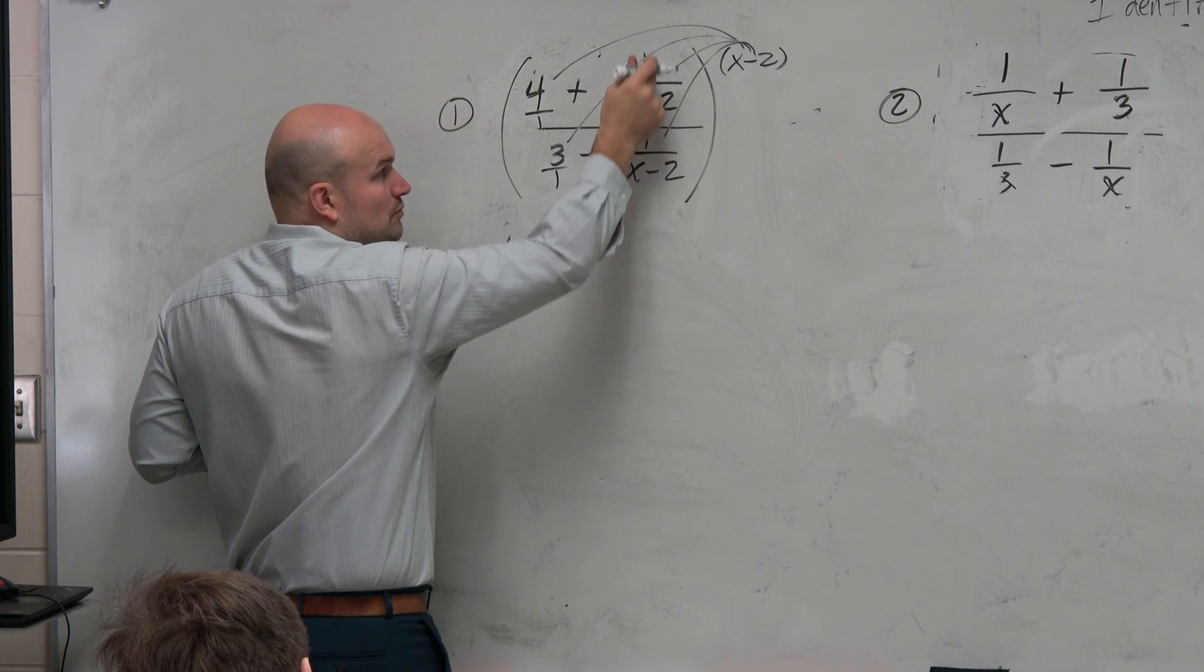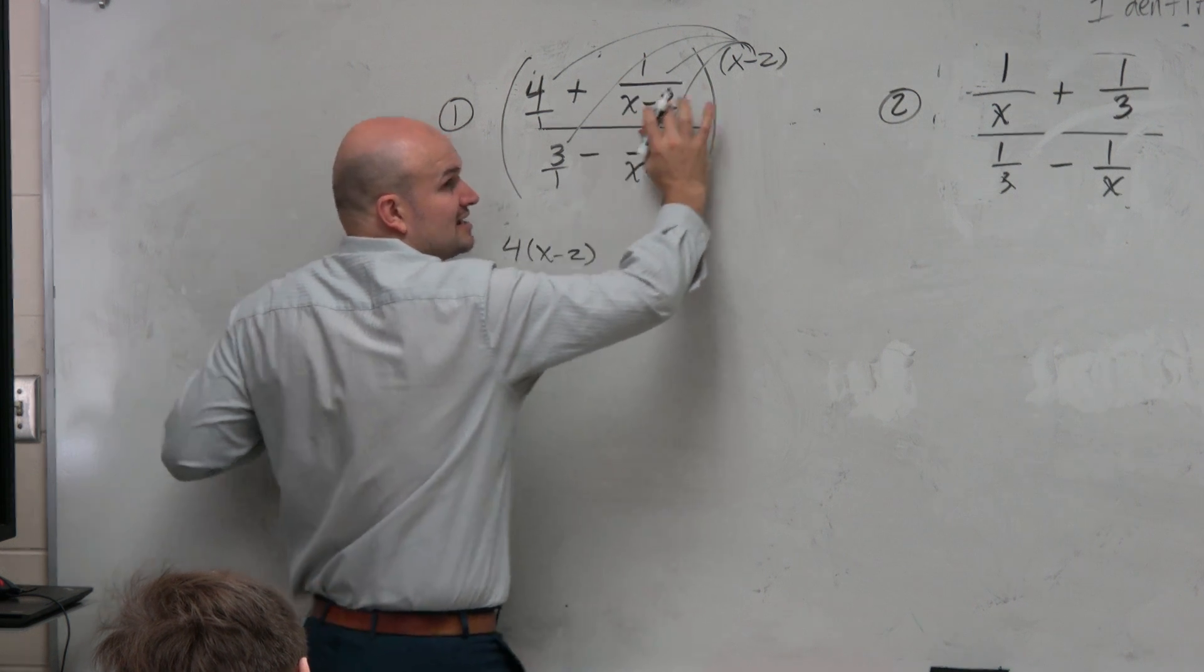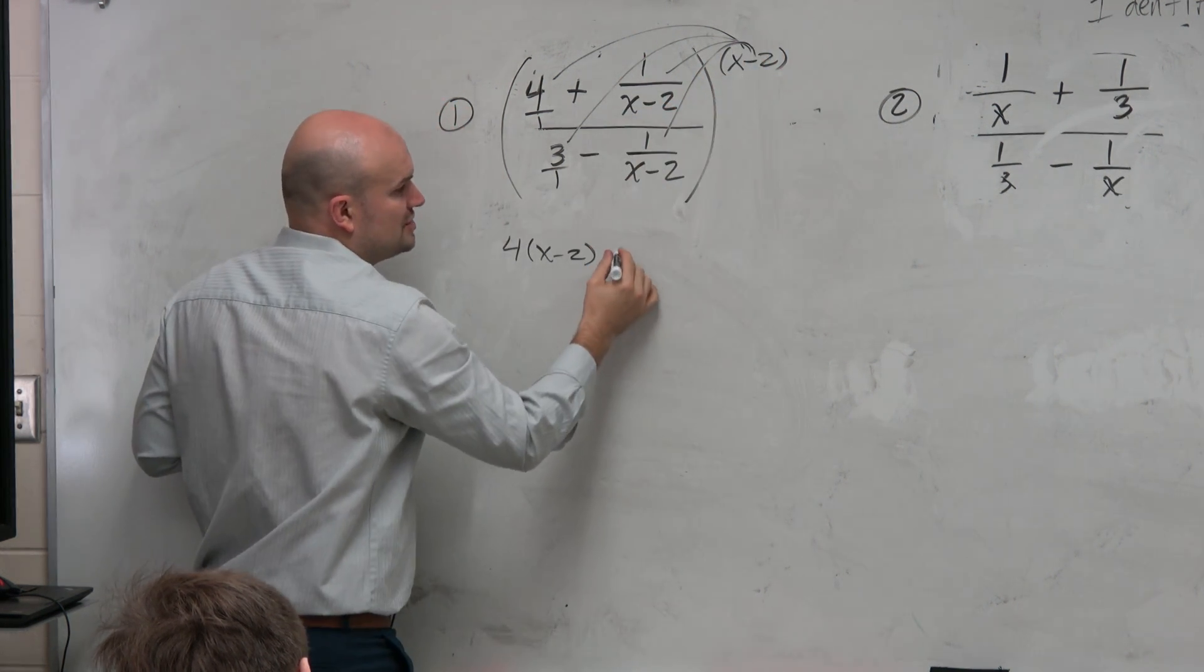If I multiply x minus 2 times 1 over x minus 2, you guys can see that the x minus 2's will divide to 1. Just leave me with 1.